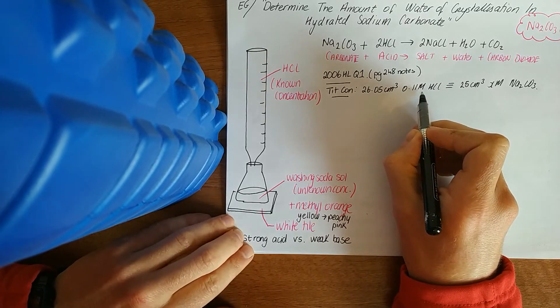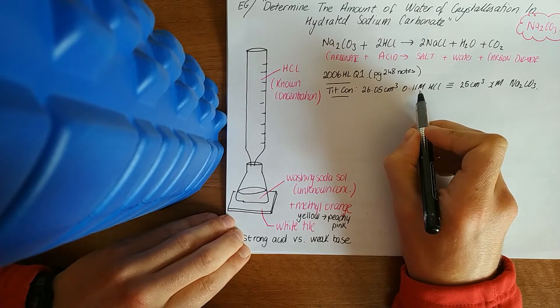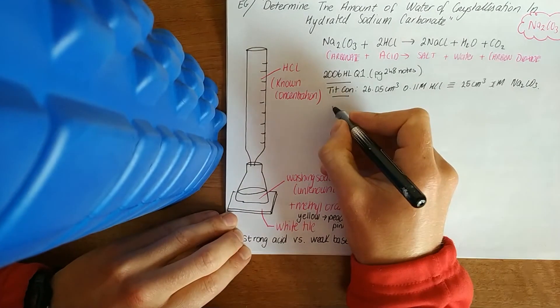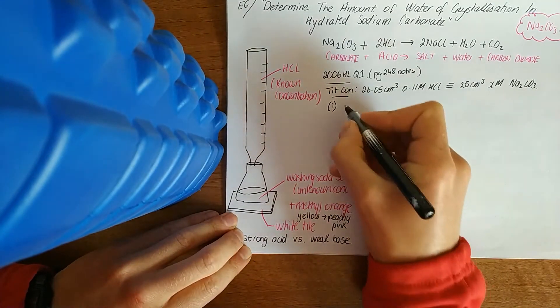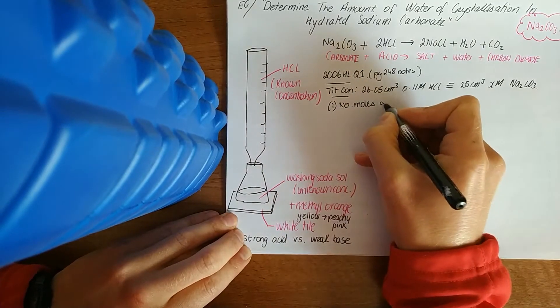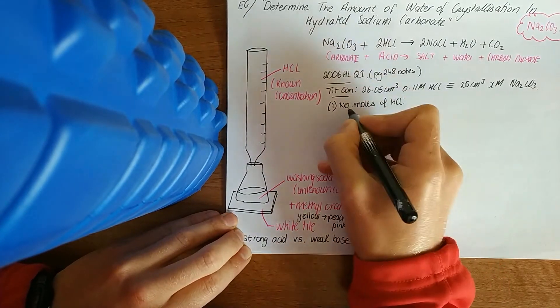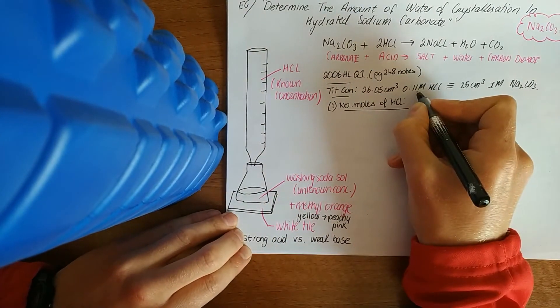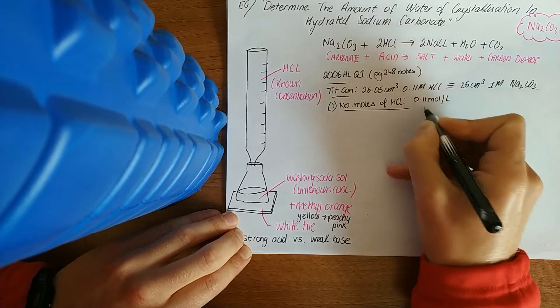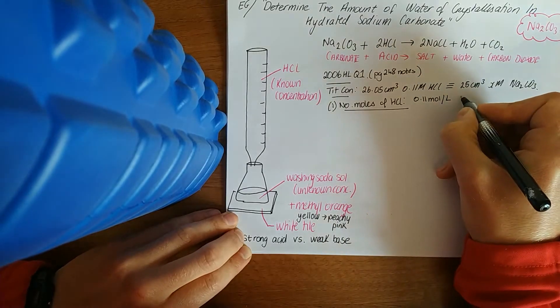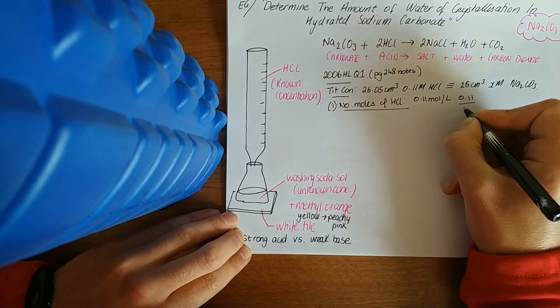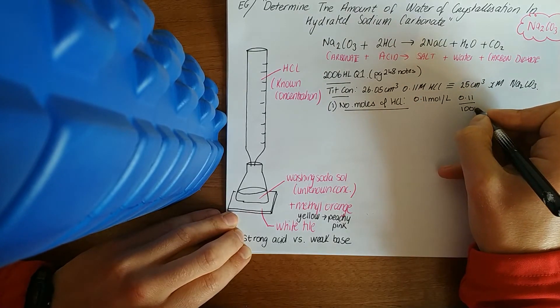Once you see that big M, that means moles per litre. You've got to say that in chemistry or say it in maths. The first thing they'll ask you for is the number of moles of HCl. When you see the big M, it means the number of moles in a litre.